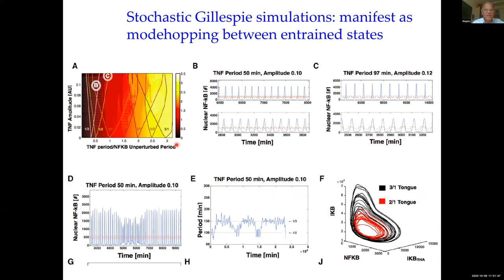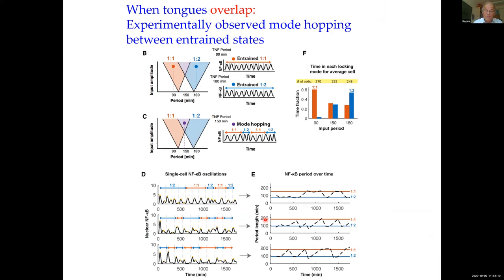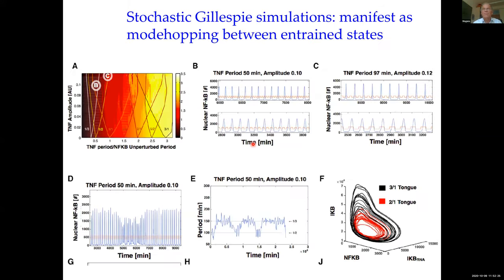With my student Matthias Helfair, we ran simulations placing the system exactly at two overlapping tongues and added noise via Gillespie simulations. We see jumps back and forth between the solutions of the two tongues — exactly as seen in the experiment. We call this mode hopping or multiplexing. Applying the NF-κB equations at the two-tongue overlap and adding noise produces the same jumping between two states.